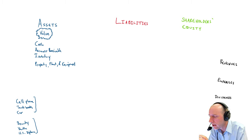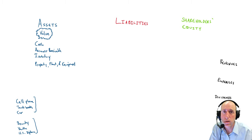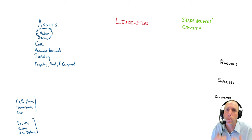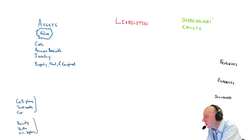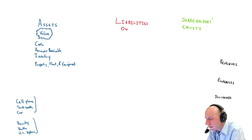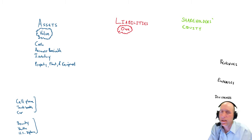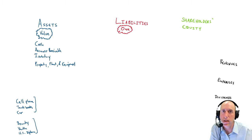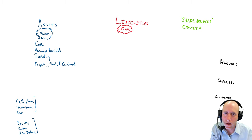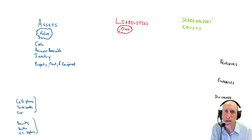So just to reiterate: when you think asset, think something of value that a company owns or controls, and the value can be reasonably reliably measured. Looking at liabilities — if my keyword for asset was 'value,' my keyword for liability is even simpler: it's 'owed.' Liabilities are anything that has to be repaid in the future. From a student perspective, you might have student loans — those are liabilities. If you have a phone bill sitting on your table and you haven't paid it yet, great example of a liability. The technical definition would be any future economic obligation, meaning anything they have to pay back in the future.